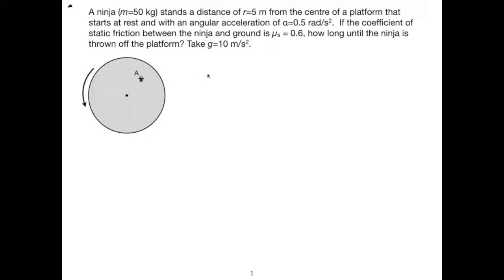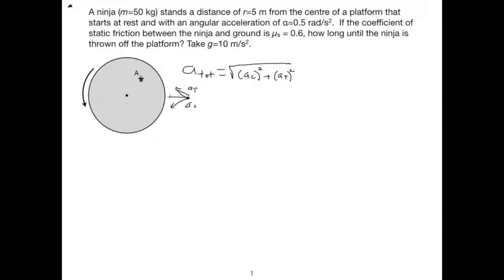This is an interesting problem because we have to have a static friction force providing an acceleration, and that acceleration has two components. The total acceleration is the quadratic sum of the centripetal acceleration squared plus the tangential acceleration. If we think about this ninja, there's going to be an acceleration a_c, a tangential acceleration a_t at 90 degrees, and the total acceleration is just the resultant of these two components.